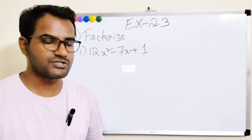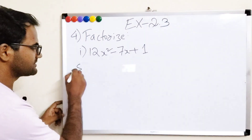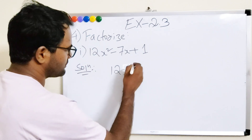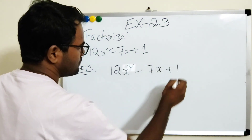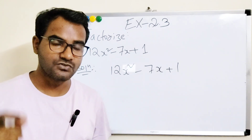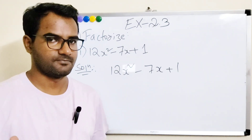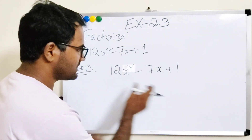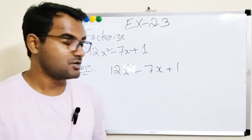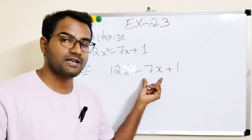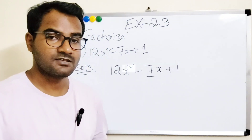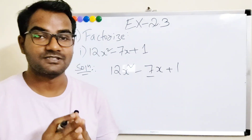Alright, let me write the solution. We have 12x² minus 7x plus 1. The first thing we need to do is split the middle term. The middle term here is minus 7x, so we have to split this minus 7x.